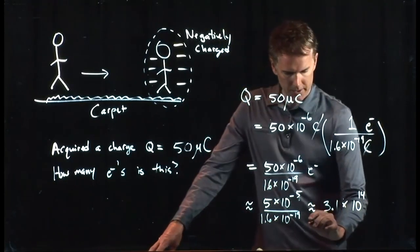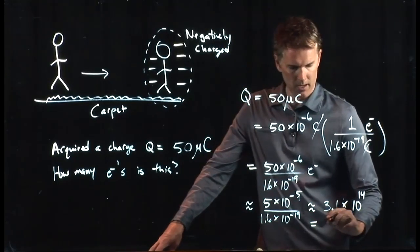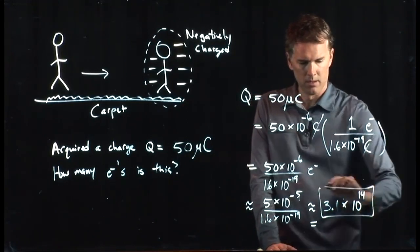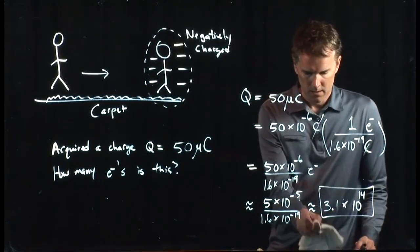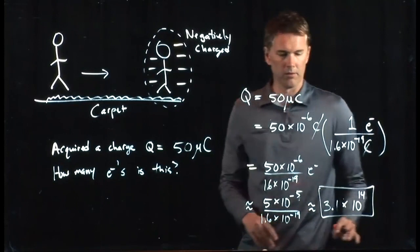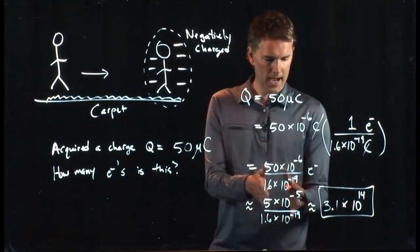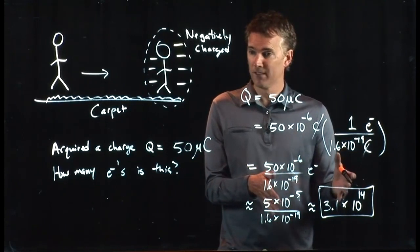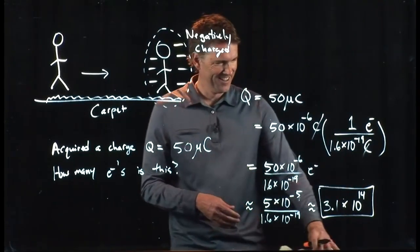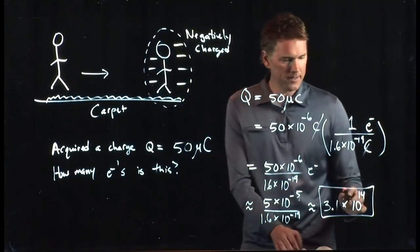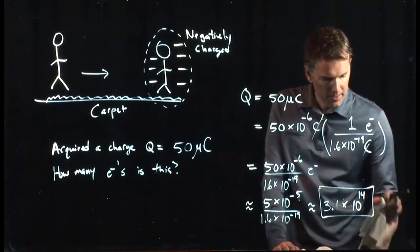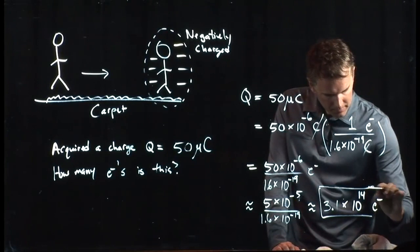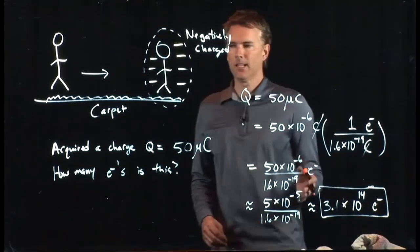And did anybody punch it into their calculator? What did you get? Same thing? Okay, good. This is the beauty of doing math in your head and also the beauty of doing the lecture twice. So we've got 3.1 times 10 to the 14, and this is a number of electrons. That's how many electrons you pick up.